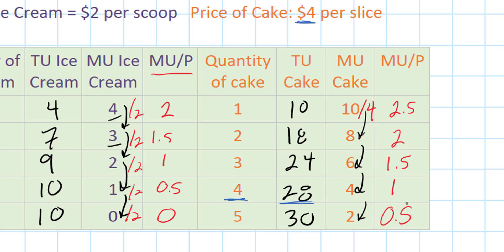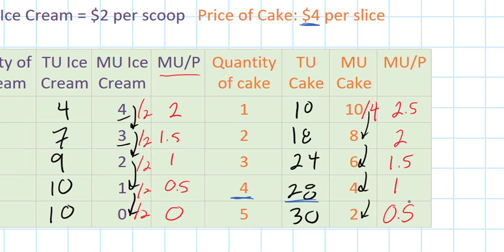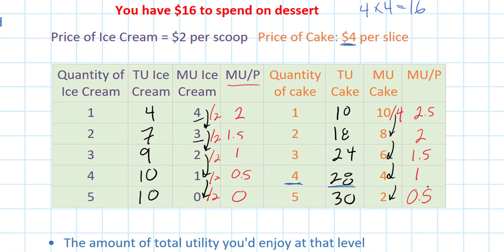Now I have the information I need to determine the optimal combination of cake and ice cream that I should consume with my $16 budget. The way I do this is I always try to maximize my marginal utility per dollar spent as I consume these two goods.